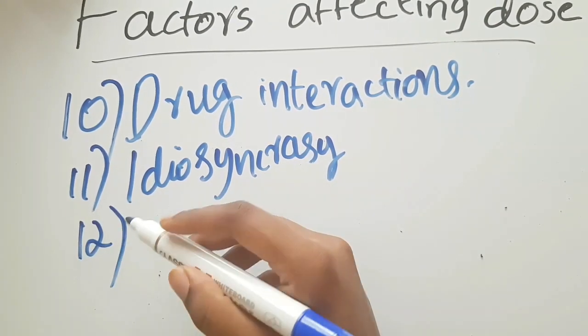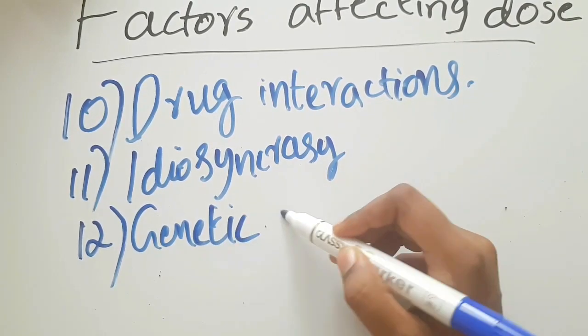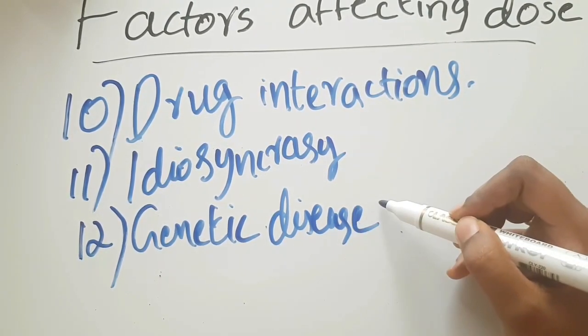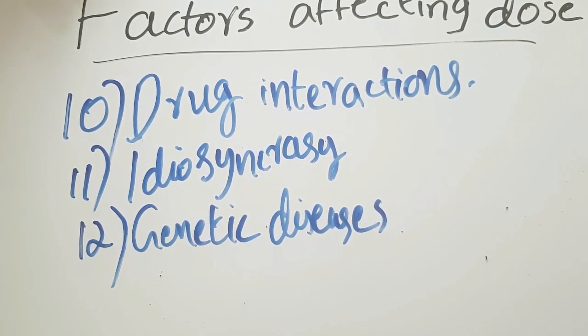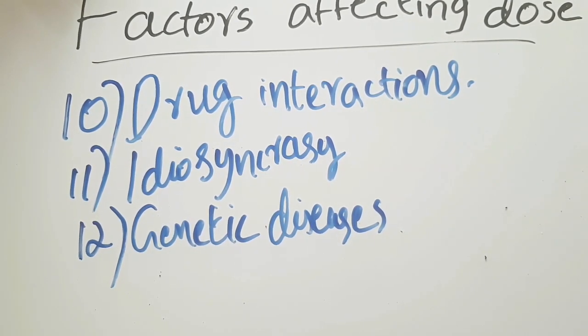Next, twelfth factor: genetic disorders. Genetic disorders or diseases will also affect the doses of drugs. For example, in some patients with genetic defects, they lack some enzymes. In those cases, some drugs are contraindicated. For example, patients lacking G6PD enzyme - that is glucose 6-phosphate dehydrogenase enzyme - should not be given primaquine, an antimalarial drug, because that will cause hemolysis. That's why genetic disorders or diseases will affect the dose of a drug.